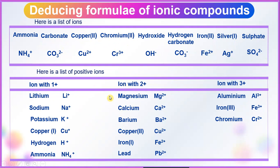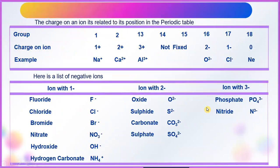This table consists of a list of positive ions. Ions with 1+ charge — examples: lithium, sodium, potassium, copper(I), hydrogen, ammonium. Ions with 2+ charge — examples: magnesium, calcium, barium, copper(II), iron(II), lead. Ions with 3+ charge — examples: aluminium, iron(III), and chromium.